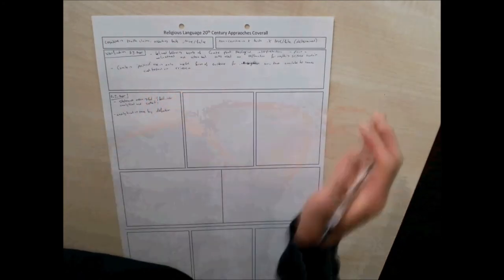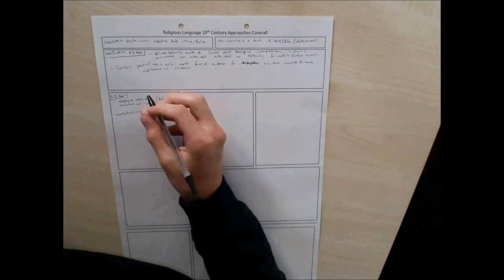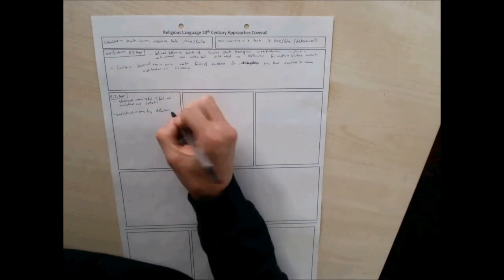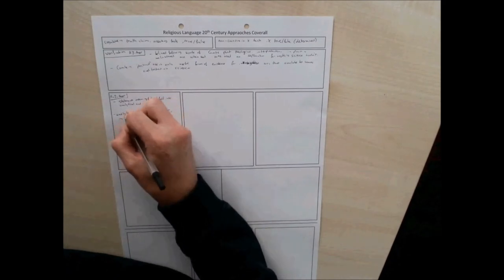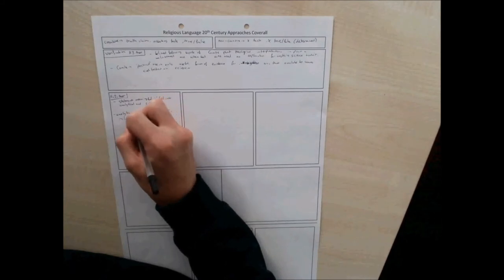Analytical is true by definition, such as those found in the dictionary. All bachelors are unmarried men. Bachelors and unmarried go together. If you said all bachelors are married men, you're just wrong. Because by definition, a bachelor means unmarried.